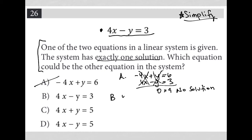So choice B, same thing, 4x minus y equals 3. Well, that's exactly what we started off with, right? 4x minus y equals 3. Hopefully you know that this means that we're going to have infinitely many solutions.